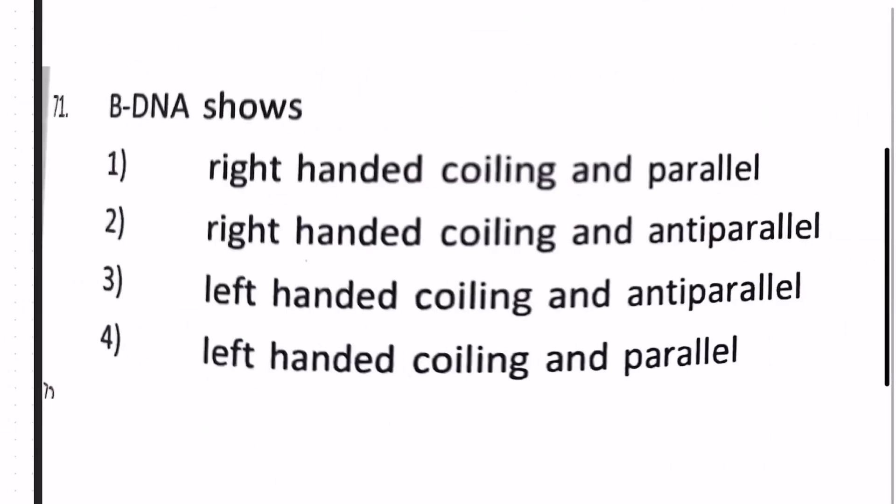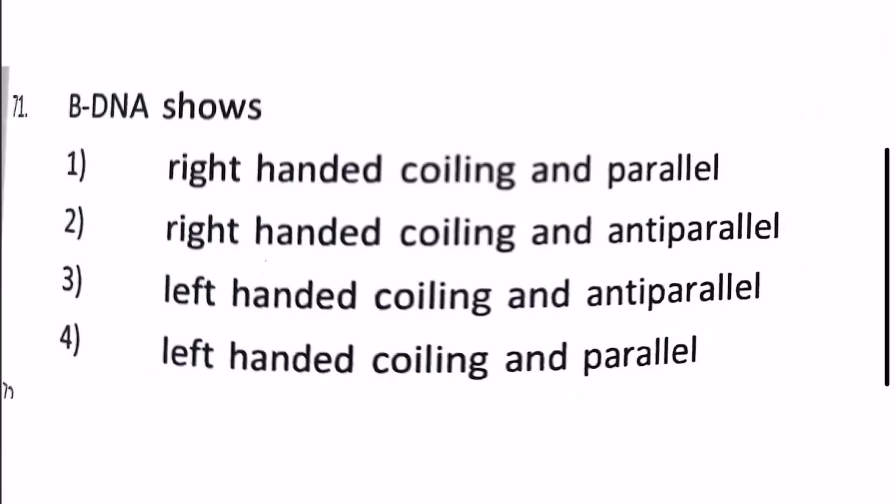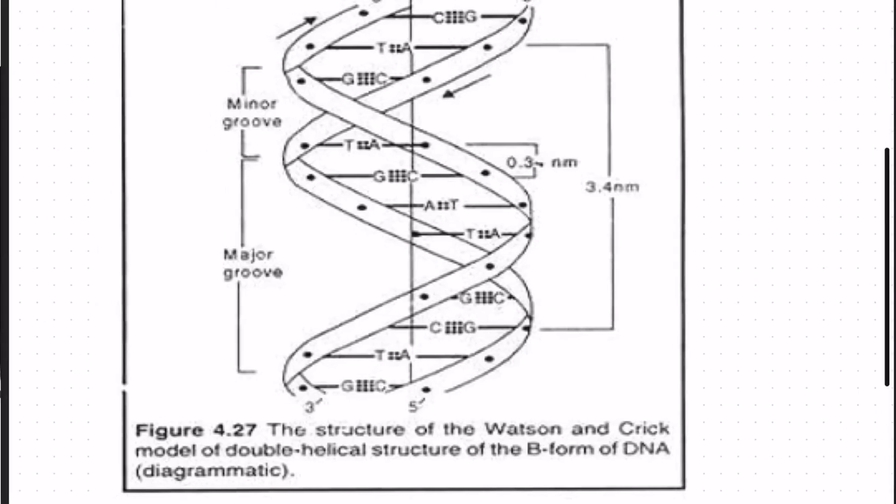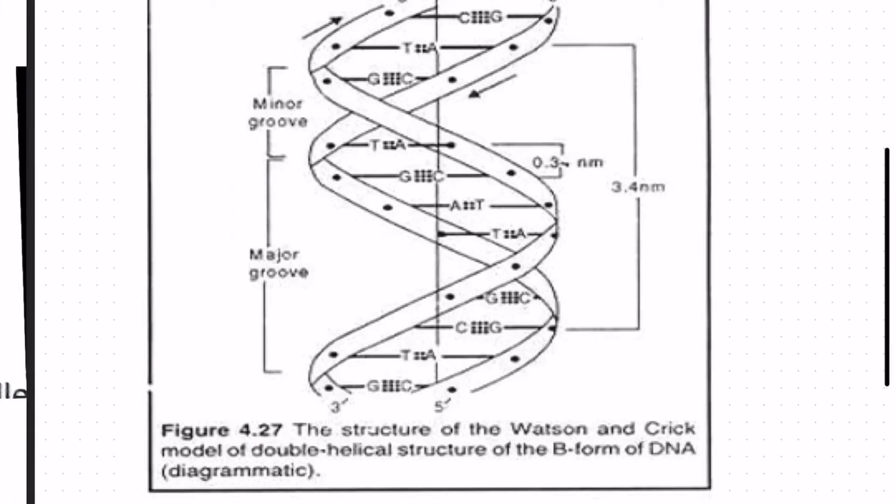Our next question is: B-DNA shows 1) right-handed coiling and parallel, 2) right-handed coiling and anti-parallel, 3) left-handed coiling and anti-parallel, 4) left-handed coiling and parallel. So B-DNA is what the human commonly shows this type of DNA. So the answer is right-handed coiling and anti-parallel. I'll give you a reference. So this is a figure, the structure of the Watson and Crick model of double helical structure of the B form DNA showing a left-handed DNA structure and it is anti-parallel since once it moves from 3' to 5' in the other complementary side it moves from 5' to 3'.